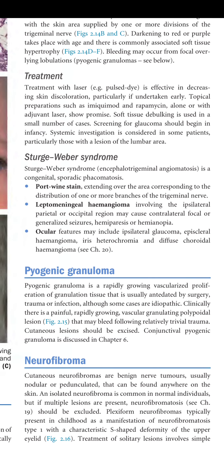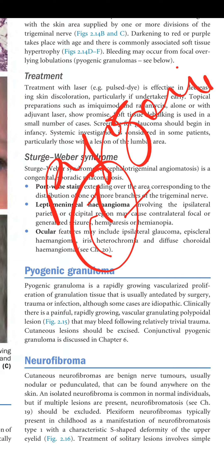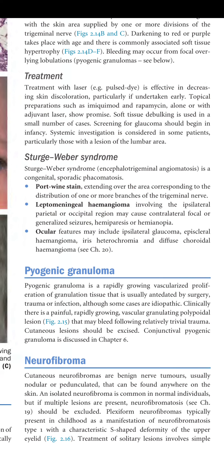Pyogenic granuloma is a rapidly growing vascularized proliferation of granulation tissue that is usually preceded by surgery, trauma, or infection, although some cases are idiopathic. Clinically, it is a painful, rapidly growing vascular granulating polypoid lesion that may bleed following relatively trivial trauma. Cutaneous lesions should be excised.